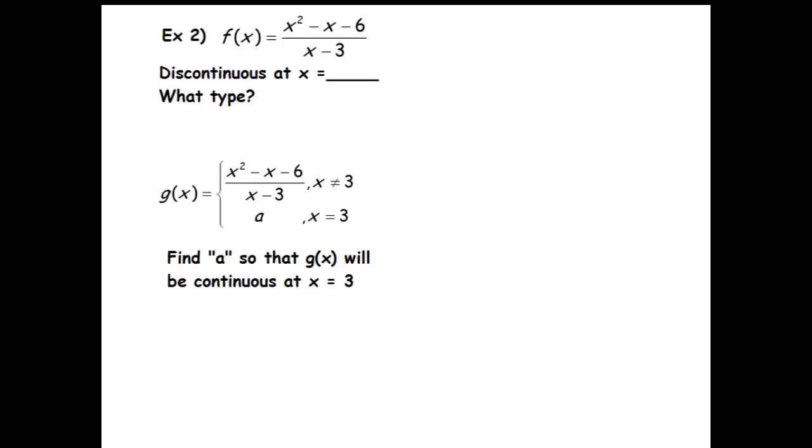So let's look at this example here. I've got another rational function, f of x equals x squared minus x minus 6 over x minus 3. And we have to describe where it's discontinuous. So let's see. I'm going to factor the top, and when you do that, you get x minus 3 times x plus 2. Divide that by your x minus 3 there. We see that those cancel, and what we're left with is just x plus 2.